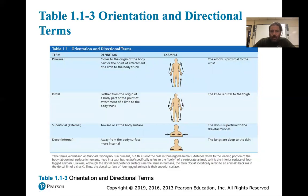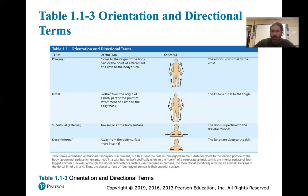Proximal means close to the point of attachment of a limb to the body. For example, the acetabulum is proximal to the distal part of the foot, or the coracoid process is proximal to the thenar eminence. When you start learning about muscles, one part is always proximal and the other is always distal. Distal is farther from the origin or point of attachment — for example, the wrist is distal to the elbow, and the patella is distal to the head of the femur.